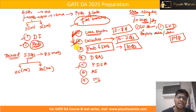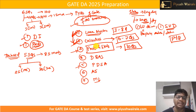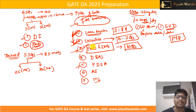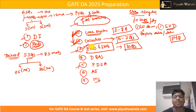For probability and statistics, we have a huge syllabus, and I've already discussed every topic in detail in my course. You can expect 10 questions from this section. If you observe the previous year GATE DA paper, they asked one question from every topic, covering almost the entire syllabus. So try to cover the entire syllabus for probability and statistics.